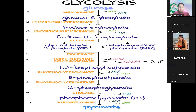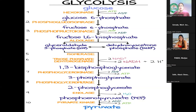Pyruvate, once formed, is converted into acetyl-CoA, which enters the Krebs cycle. In the Krebs cycle, more ATPs are produced. The by-products of the Krebs cycle will also undergo the electron transport chain, leading to the formation of water. This entire process of glycolysis will not happen if glucose cannot enter the cell.